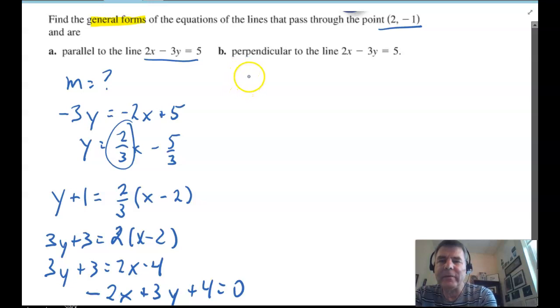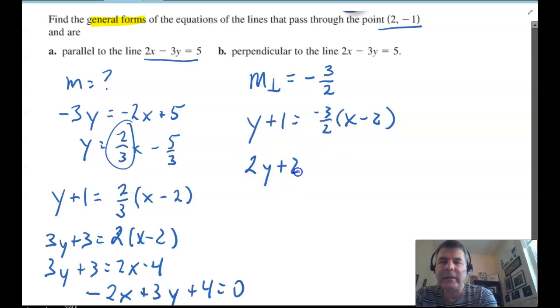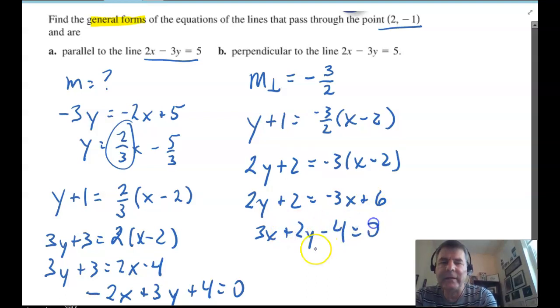Perpendicular. So, our perpendicular slope is going to be the opposite reciprocal of 2 3rds. So, that's going to be negative 3 halves. Setting it up again. y plus 1 equals negative 3 halves x minus 2. This time, I'm going to multiply by 2 to get rid of the fraction. And 2y plus 2 is equal to negative 3x plus 6. Add 3x to both sides. Plus 2y. Subtract 6 from both sides. And there's the general form of the line perpendicular. That's all you need to know about linear models and rates of change.